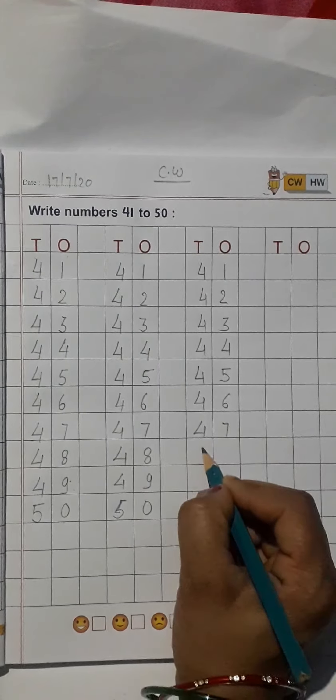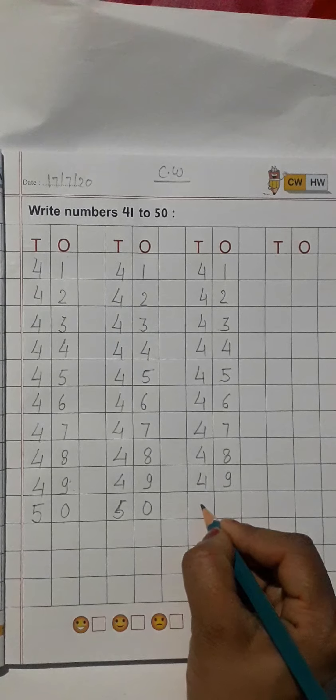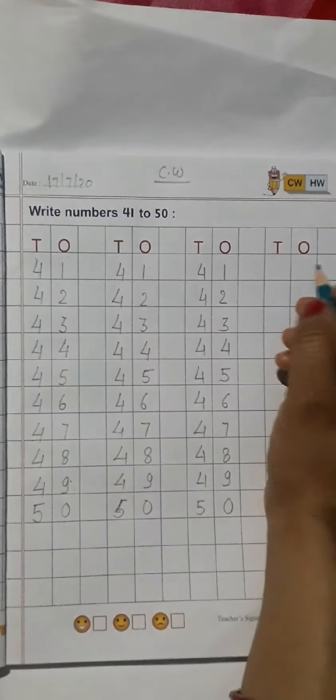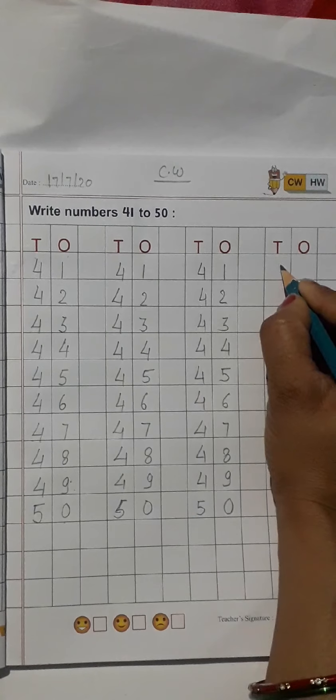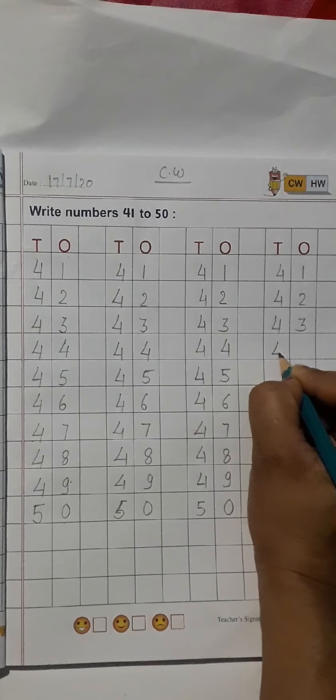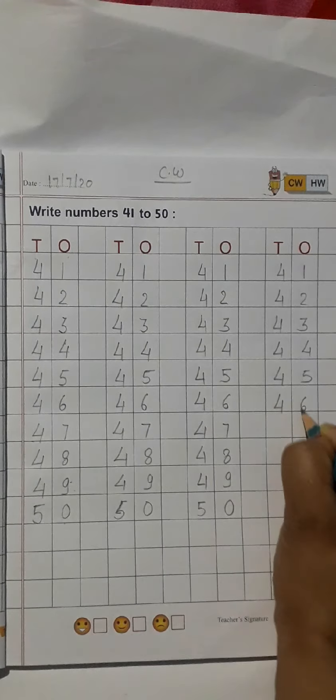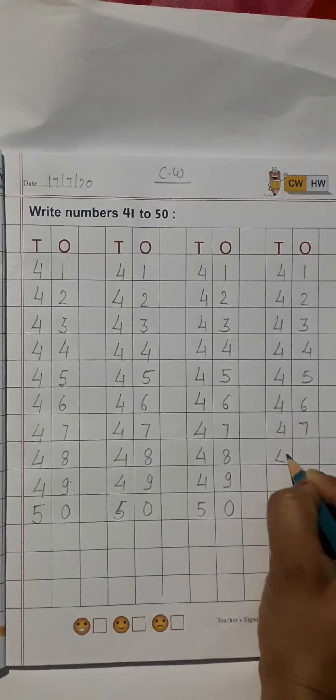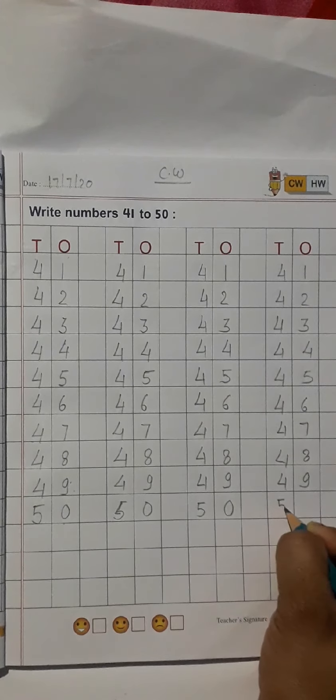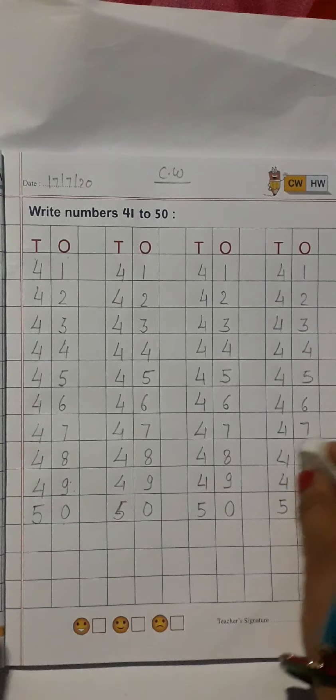47, 48, 49. We'll write the number 50. We'll repeat once again and complete. 46, 47, 48, 49, 50. Okay, now one minute, one mistake.